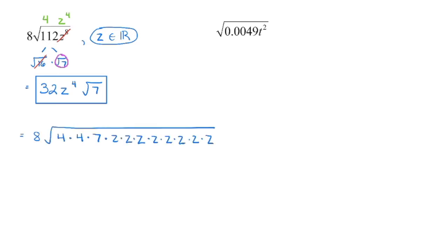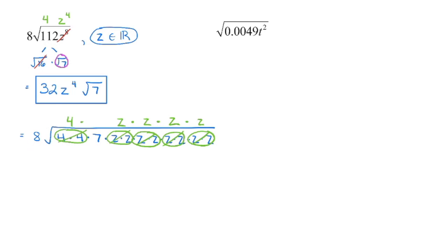Writing it out: we have 8 times the factors of 112. Breaking 112 into prime factors: 4 times 4 is 16, and 16 times 7 gives 112. Then we have z multiplied 8 times. Again, we are pulling groups of 2 — there is one group of 2 fours, so we pull out the 4. The 7 does not have a partner, so it stays. Then we pull one group of 2 z's and put that z up top, another group — put that z up top, another — put that z up top, another — put that z up top. Multiplying all together: 8 times 4 is 32, times z times z times z times z gives z to the power of 4. We still have that 7 in the radicand because it does not have a second 7 to group with.